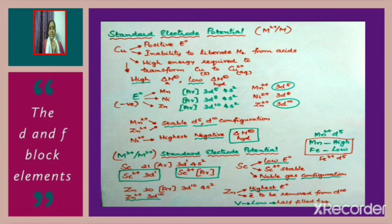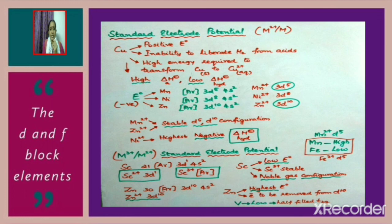Now consider the metals manganese, nickel, and zinc, which have negative standard electrode potentials. Consider the electronic configurations of Mn²⁺, Ni²⁺, and Zn²⁺. The electronic configuration of Mn²⁺ is 3d⁵, Ni²⁺ is 3d⁸, and Zn²⁺ is 3d¹⁰. Mn²⁺ and Zn²⁺ have stable d⁵ and d¹⁰ configurations, which is why they have negative E⁰ values. In the case of nickel, Ni²⁺ has 3d⁸ configuration and has the highest negative hydration enthalpy.